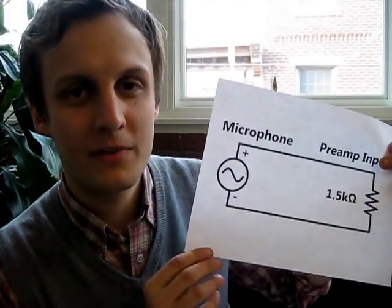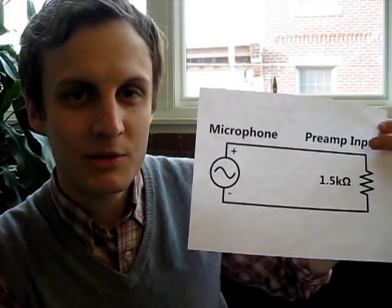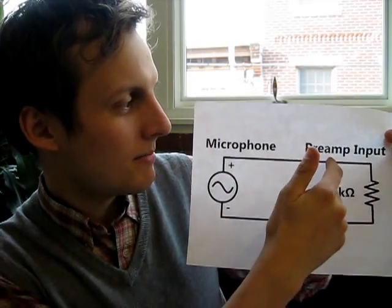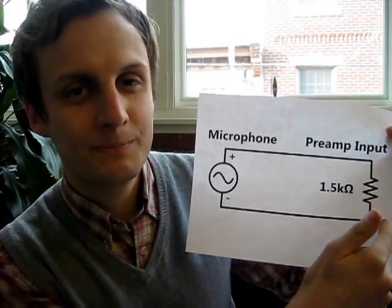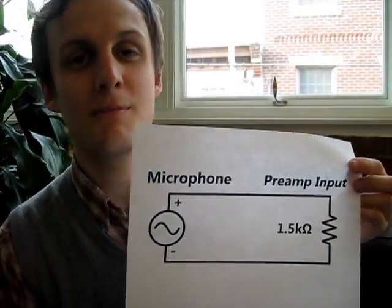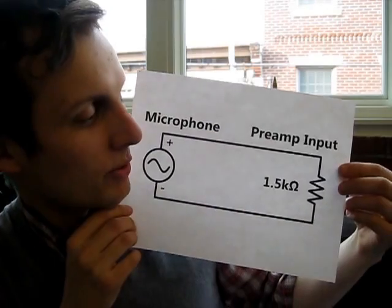Here's a very stripped-down, simplified schematic with a microphone, represented by an AC signal, and a mic preamp. Obviously a real mic preamp has a lot more circuitry than this, but I've reduced it down to just its input impedance, which is a typical 1.5 kilo ohms. The modern standard is that the input impedance of any device needs to be at least 10 times that of the output device driving it.